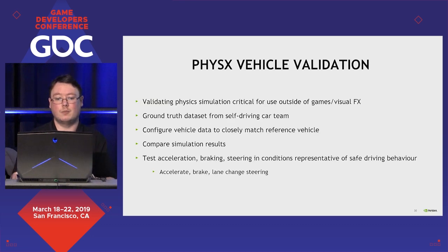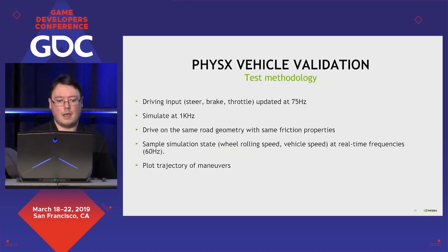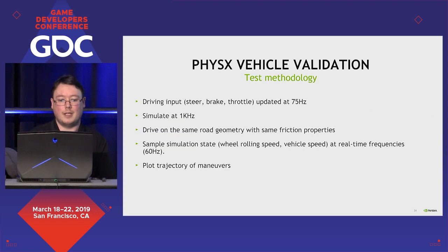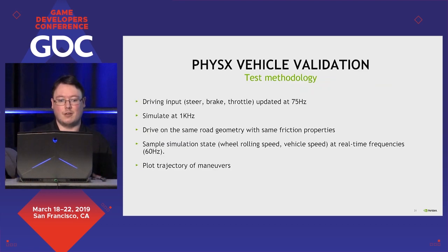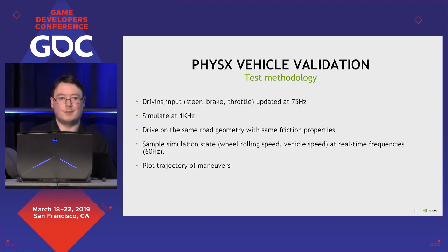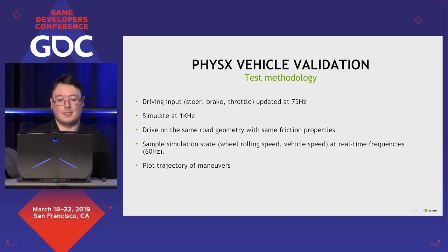The test cases we have at the moment are fairly limited and simple, but they're representative of relatively safe driving behaviors — things like testing acceleration, braking, and basic lane changing. This is the type of thing a level-two self-driving vehicle might need to do. For the test methodology: we took driving inputs — steering, brake values, and throttle values — updated at 75 Hz, because that's what we had. Our simulation ran at 1 kHz to promote as high quality as possible and minimize integration error. We attempted to drive on the same road geometry with the same friction properties, and sampled the simulation state — wheel rolling speed and vehicle speed — at 60 Hz.